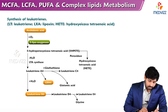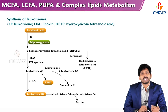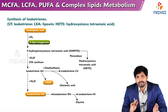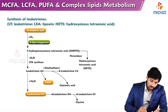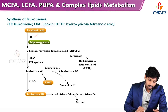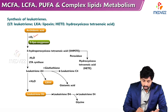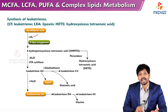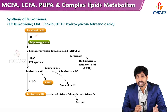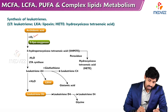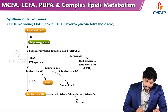Here we'll see how leukotrienes are synthesized. The short terms: LT stands for leukotriene, LXA for lipoxin, HETE for hydroxyicosatetraenoic acid. First, arachidonic acid with the help of oxygen by the enzyme 5-lipoxygenase is converted to 5-hydroperoxyicosatetraenoic acid (5-HPETE), which can be converted into hydroxyicosatetraenoic acid (HETE).